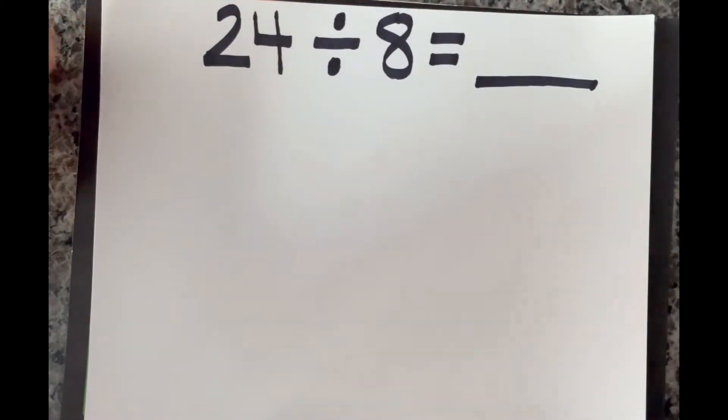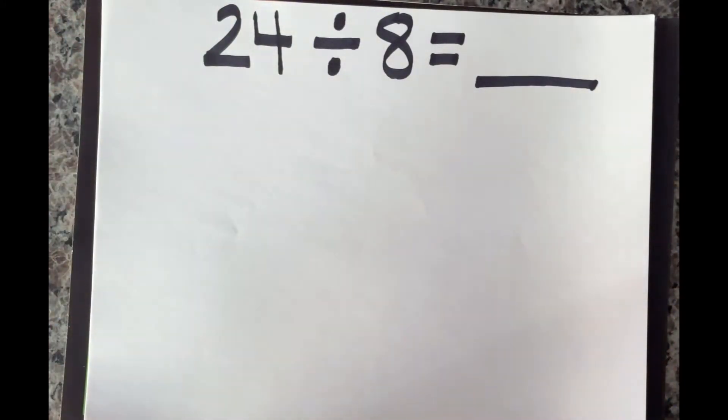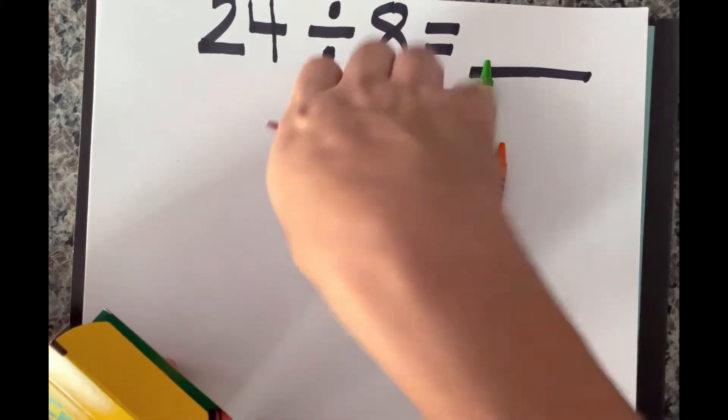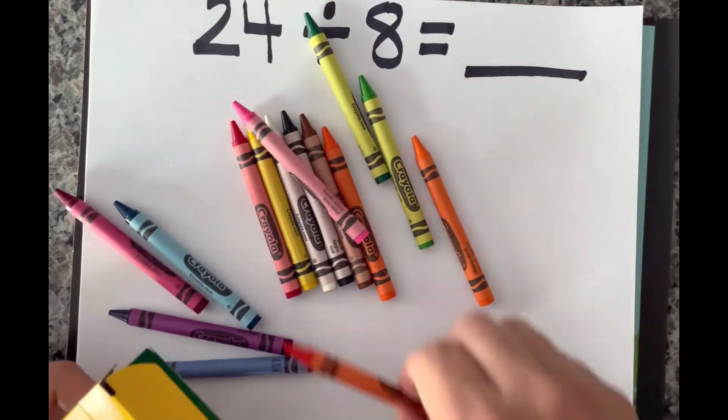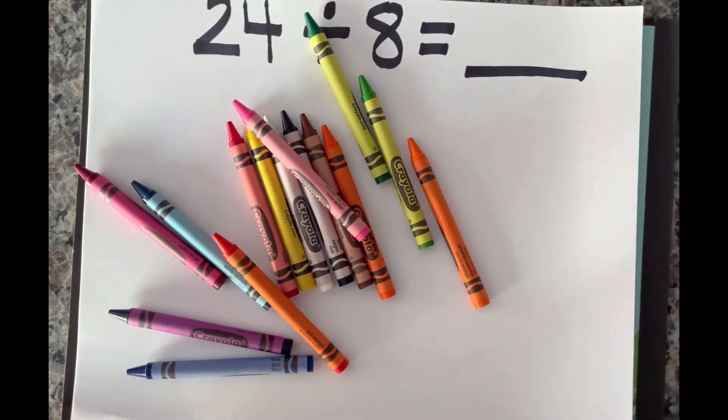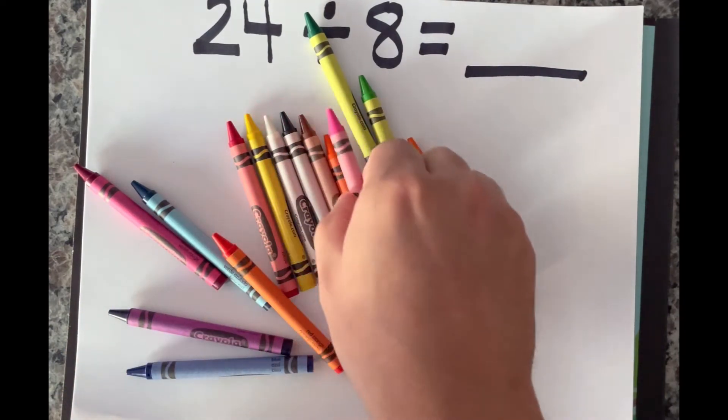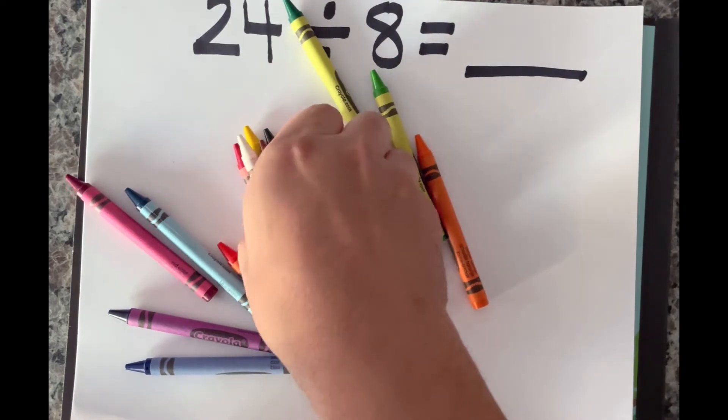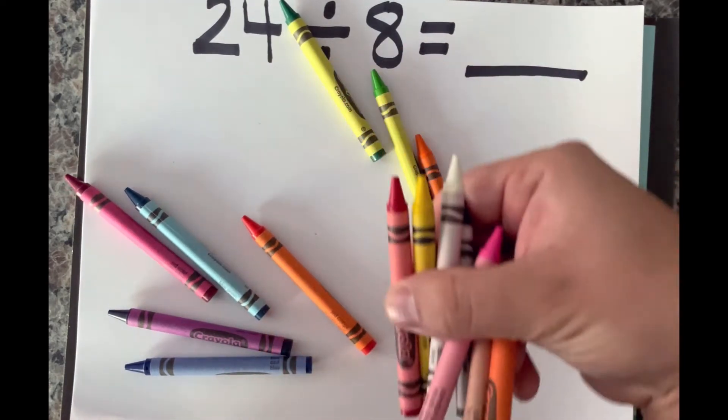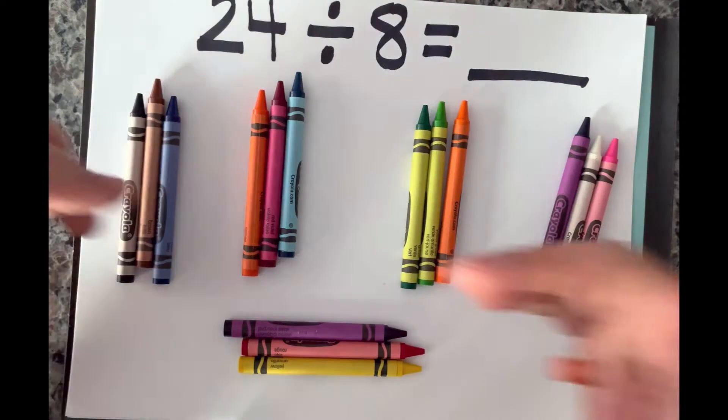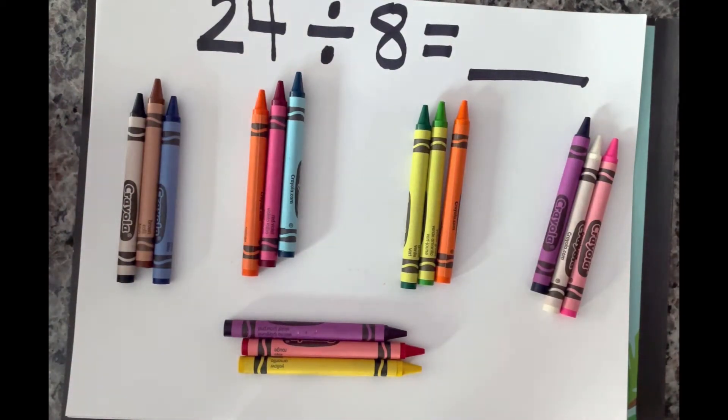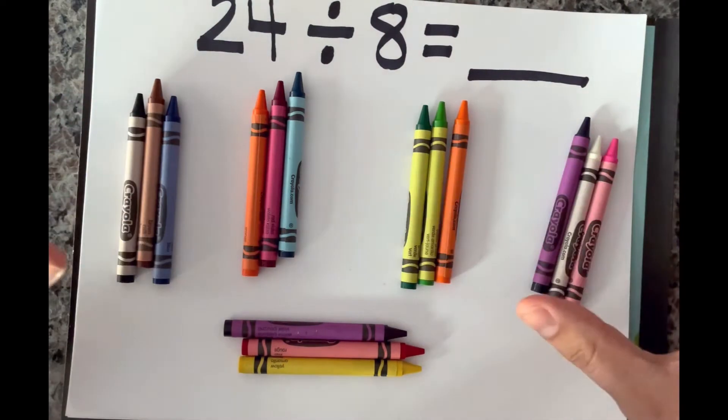For example, I'll show you. Here is a group of crayons. Now they're all over the place, right? A group of crayons. Now I could make these into equal parts and I could split them. Let's make them into equal parts so we can find out how many we have.